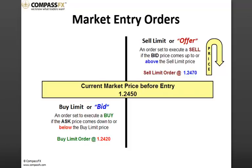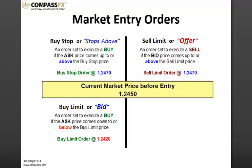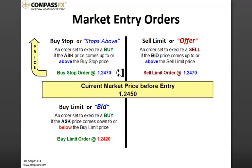Now let's look at the last two types of orders. The next one is referred to as a buy stop, or stops above. Folks often ask me: I heard there are stops above a certain price — if I'm buying, is that a stop loss order up there? No. A buy stop is an order to execute a buy if the ask price comes up to or above the buy stop price. So the market is down here at $124.50; when the market gets up to $124.70, we're looking for it to trigger and then continue to rise. That is what's referred to as stops above.